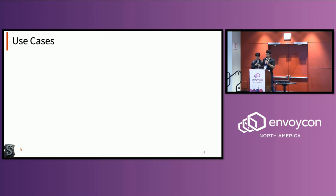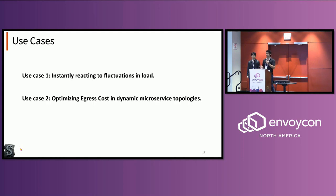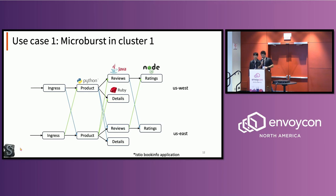Now I'll talk about the use cases where our system performs best. The first is instantly reacting to fluctuations in load. The second is optimizing egress costs in dynamic service topologies with multiple call paths. The third is handling different request types differently to optimize traffic. For the first case, imagine a setup with two perfectly replicated clusters in different regions. Traffic is stable, and all of a sudden there's a burst in US West.